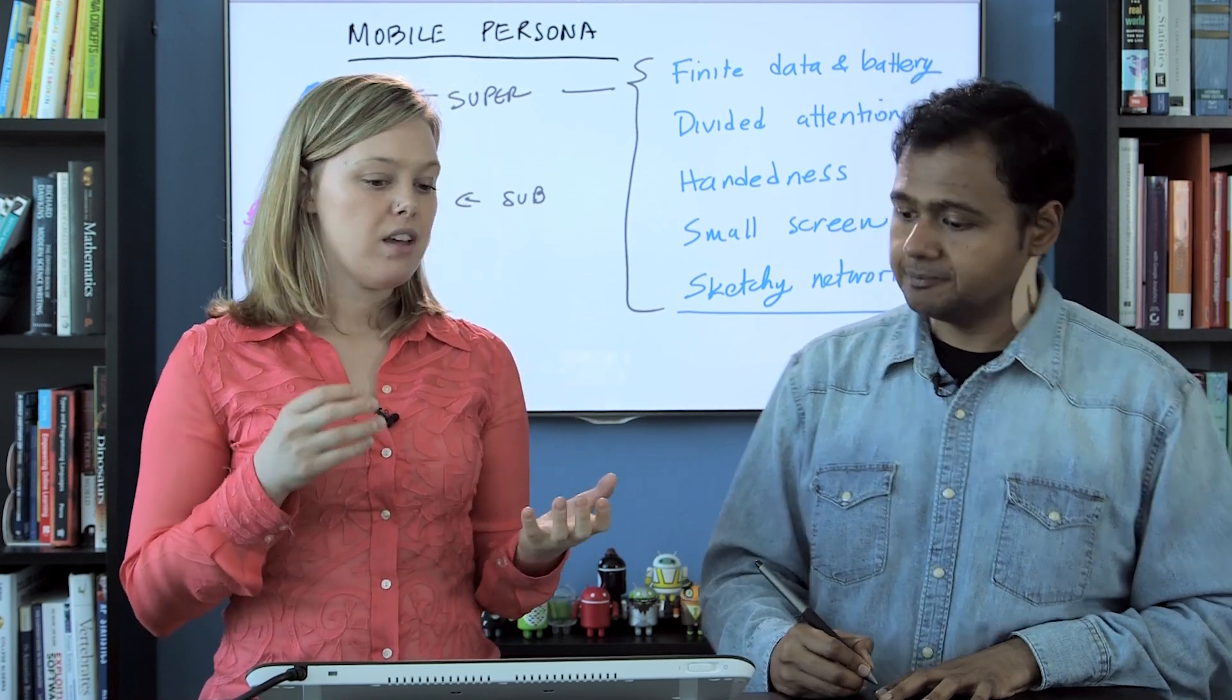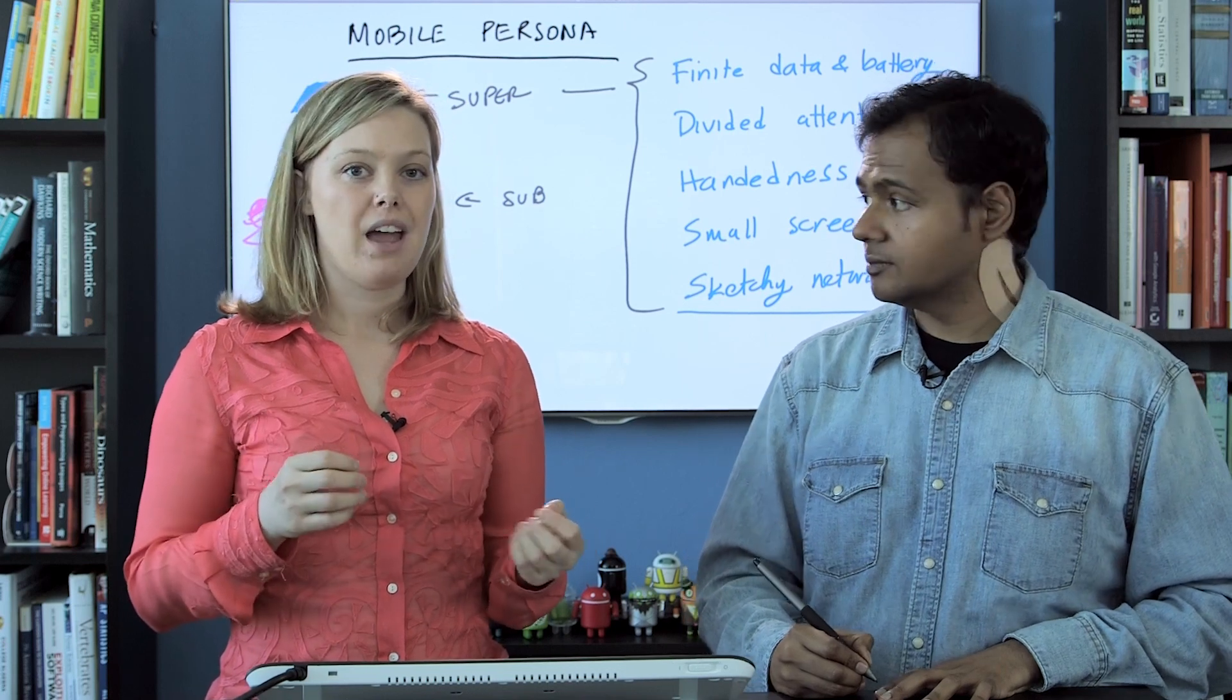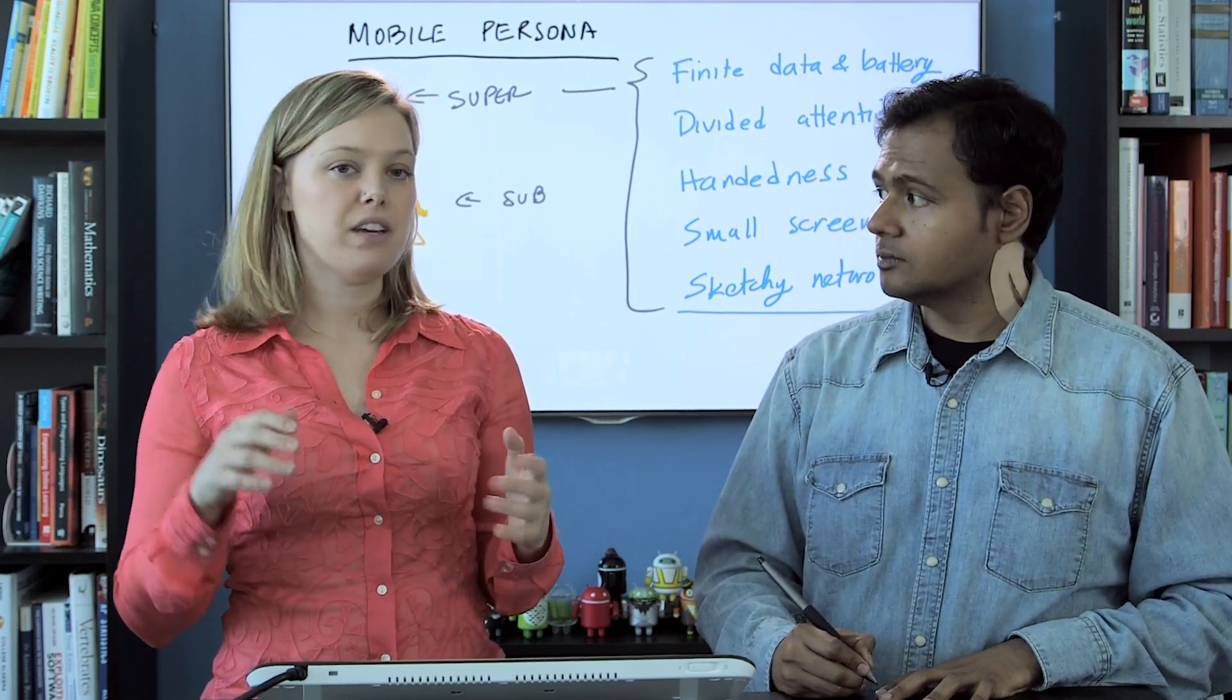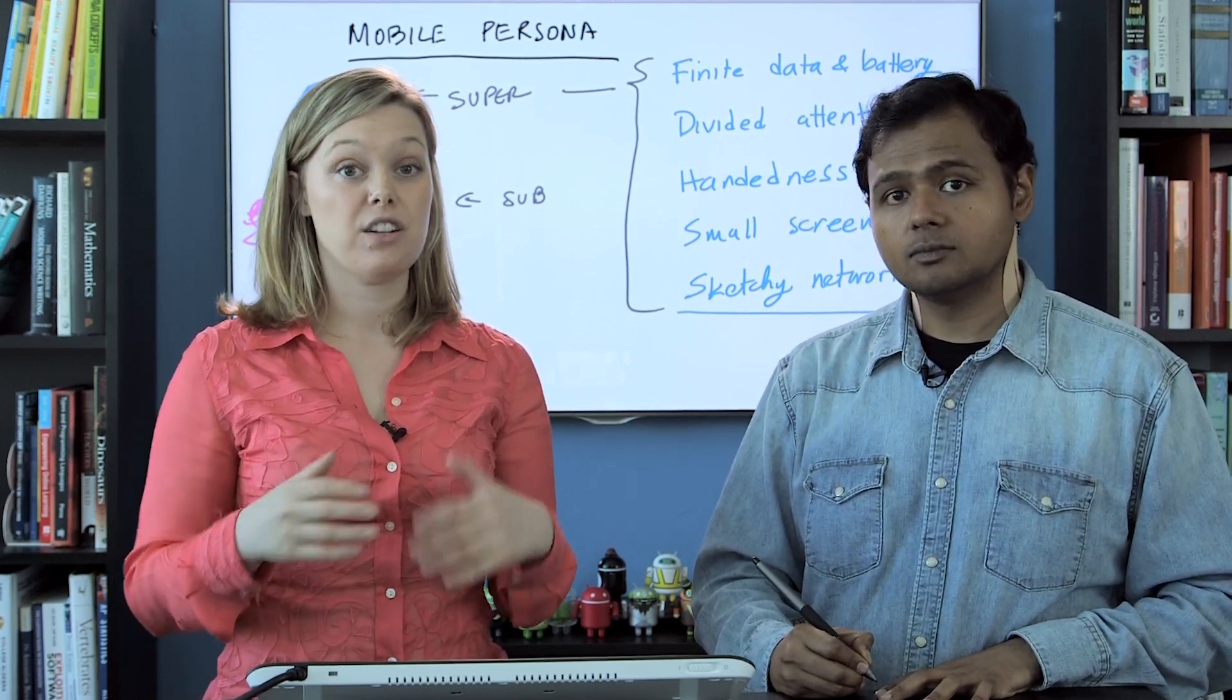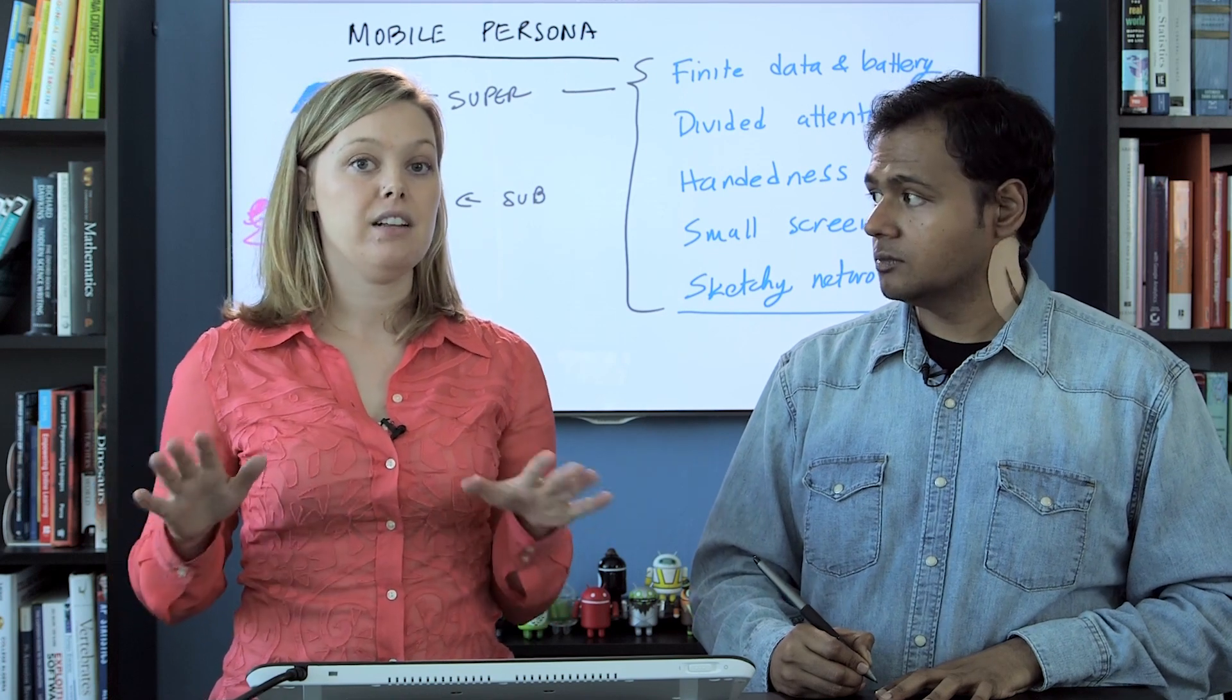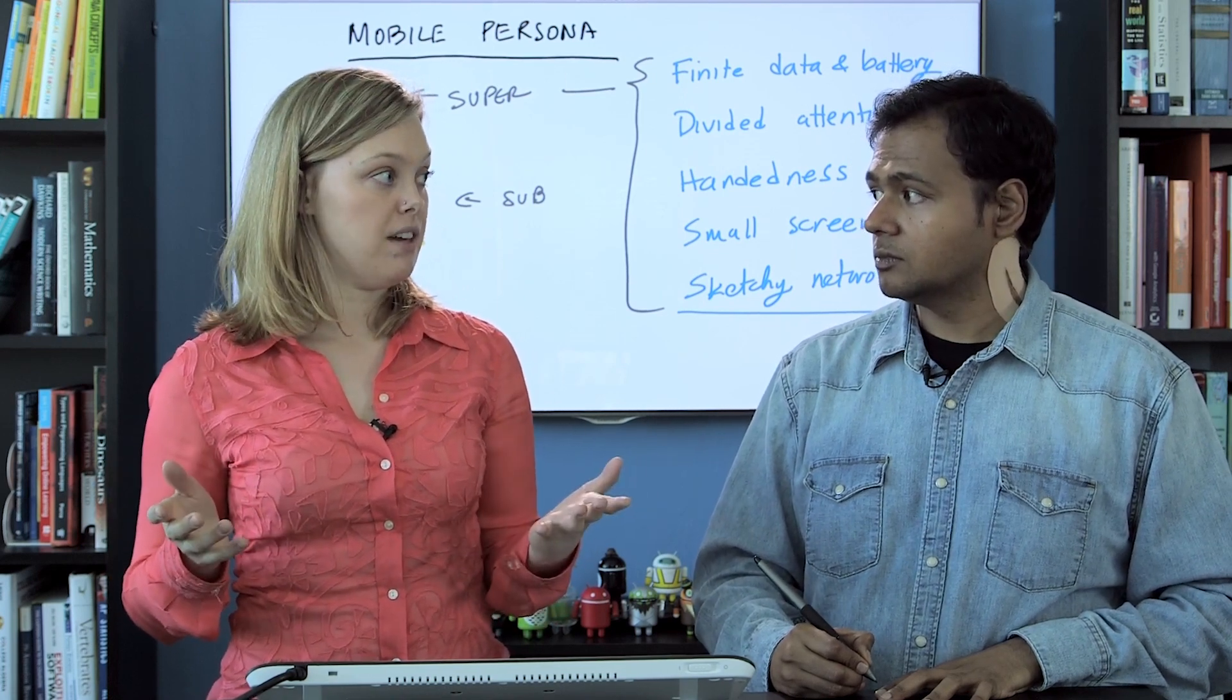Yeah, exactly. So I think that these attributes are so important and they're so concrete that we think of them more as constraints, and not just attributes. Meaning, you can't violate them at all, or your user's going to have a really bad time.